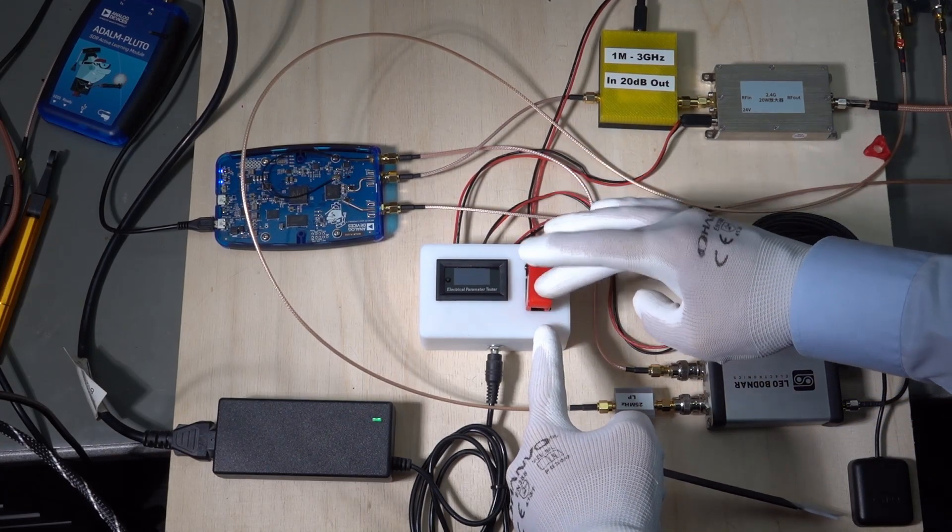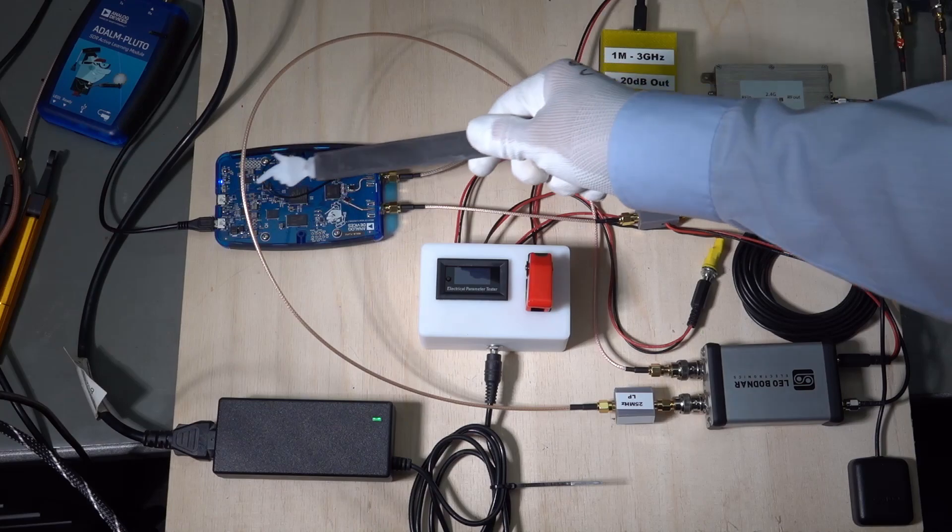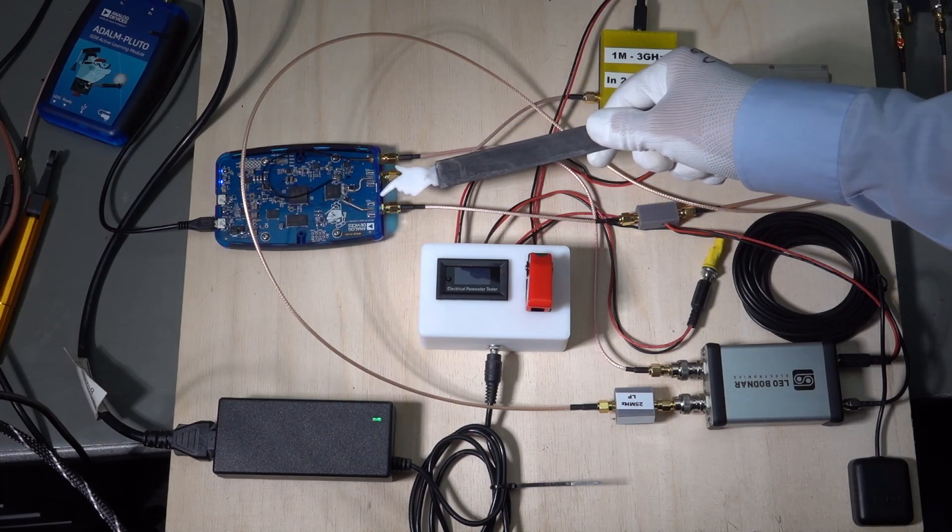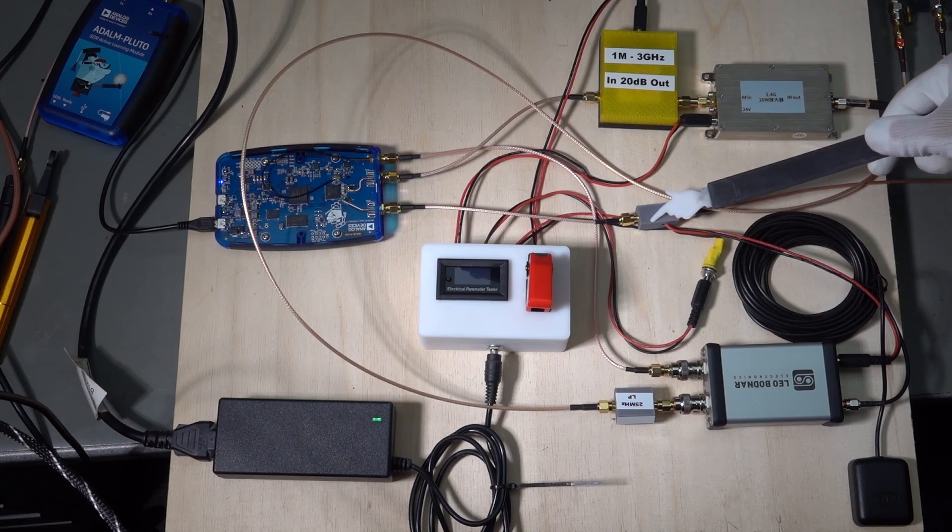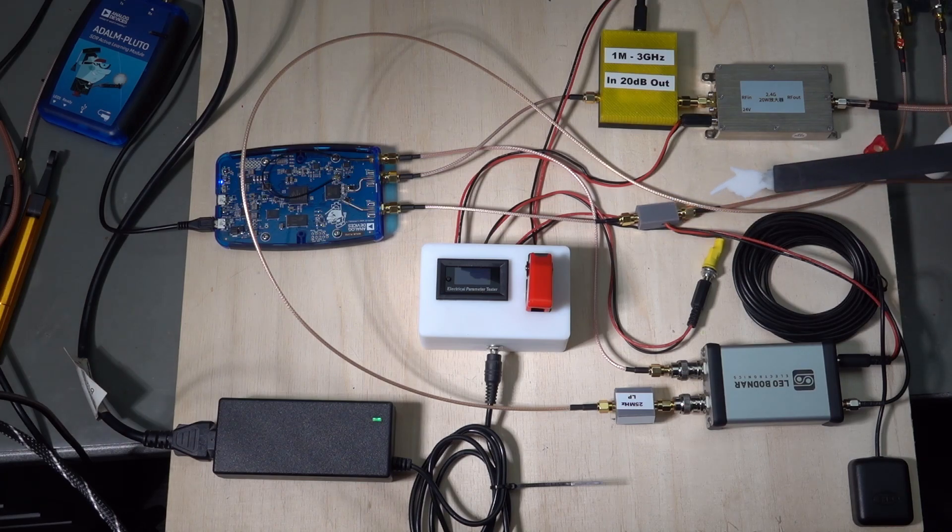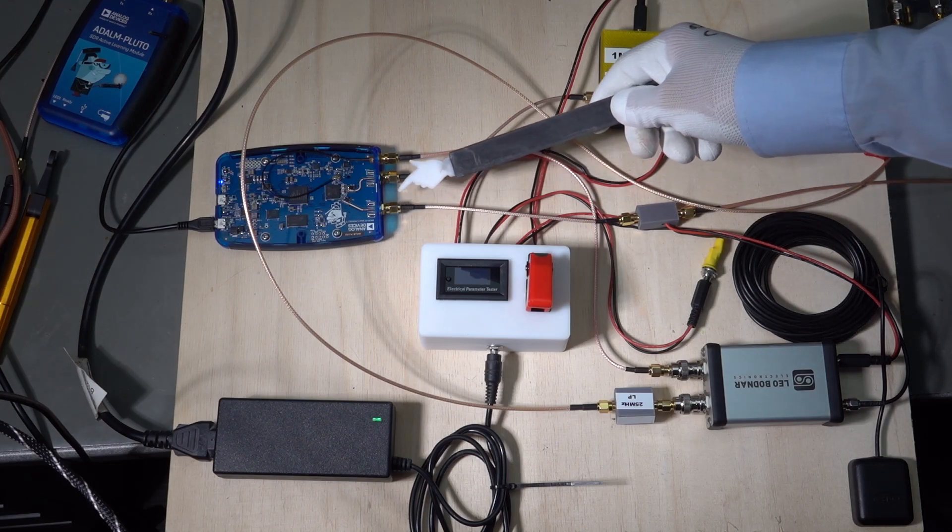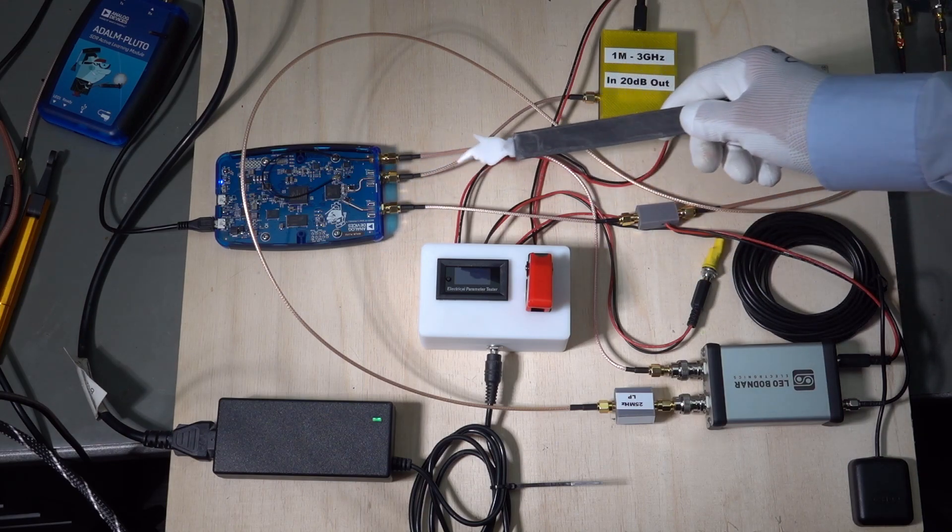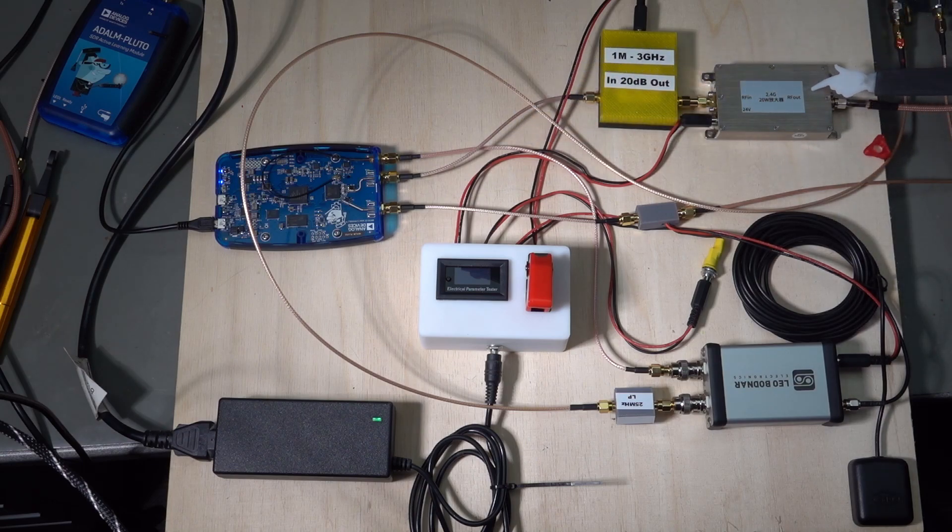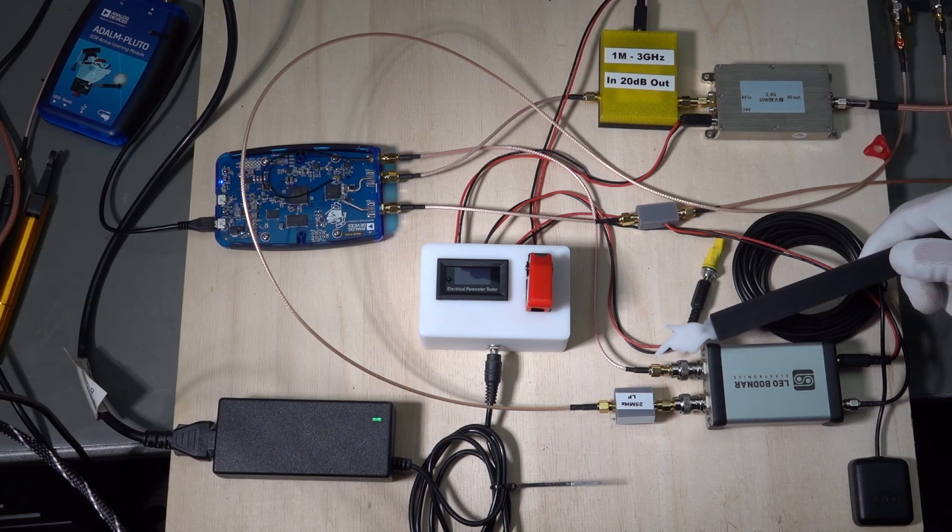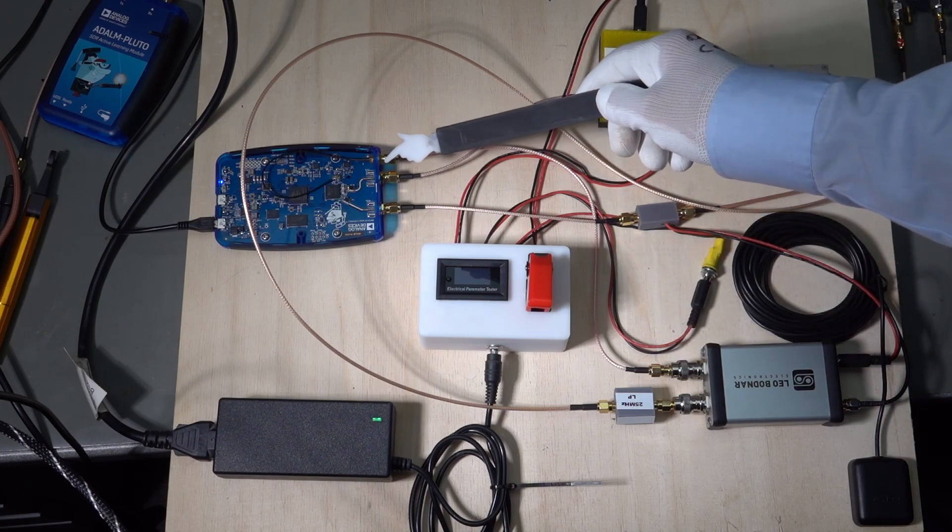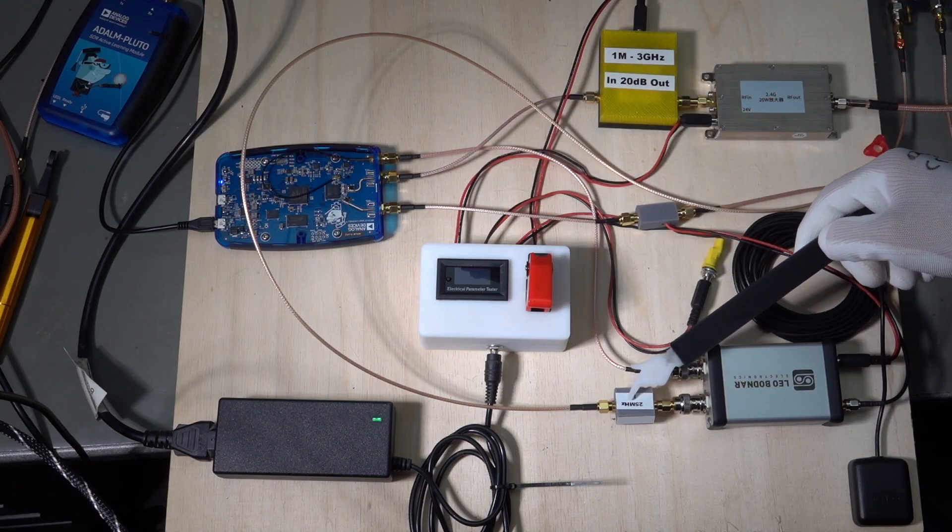Let's look at the connections and start with the Pluto. The RX path currently is quite simple, just a bias T which inserts the 12V to power the LNB. Maybe later I have to add an attenuator because the signal from the LNB is quite strong. The transmission path goes via the preamplifier to the power amplifier and to the patch antenna. One channel of the GPSDO is connected to the Pluto and the other, via the filter, is connected to the LNB.